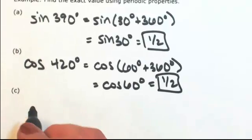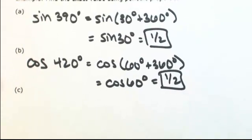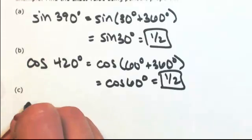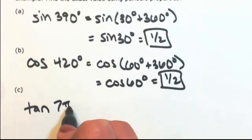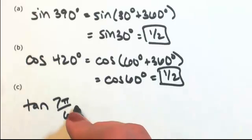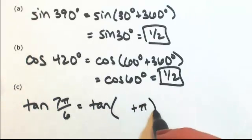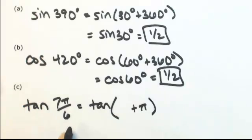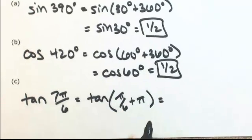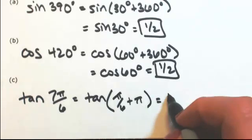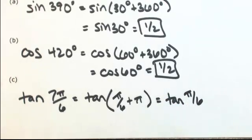What's different about tangent is that the period is only 180 degrees, or pi. So if I have the tangent of 7 pi over 6, I could rewrite this by adding a pi to pi over 6. So because the period of tangent is pi, this gets me to tangent of pi over 6, where the cycle starts repeating. And that's square root of 3 over 3.